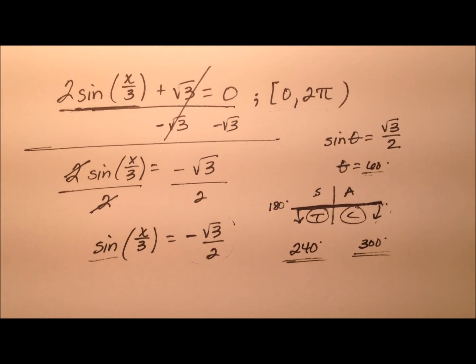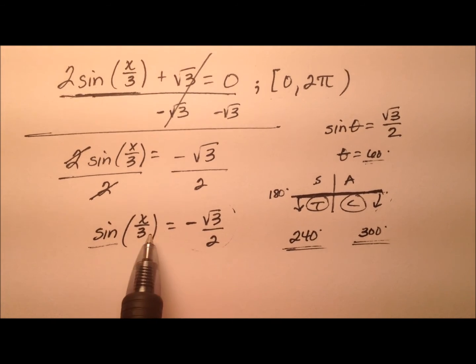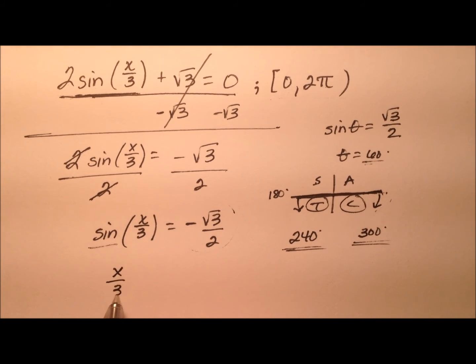So we have two values here. We know that x over 3 is going to be 240 degrees and 300 degrees.